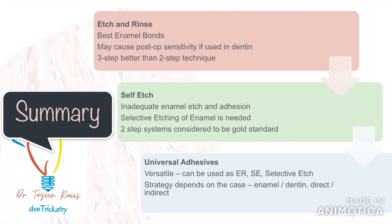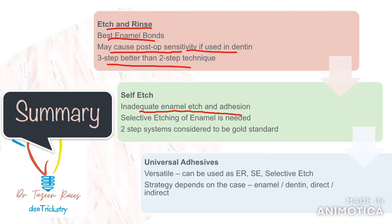Finally, to summarize: when it comes to etch and rinse adhesives, you get the best enamel bonds. It is a very good strategy for both direct and indirect restorations when limited to only the enamel. They may cause post-operative sensitivity if used on dentine without following the proper protocol, and the three-step system is better compared to the two-step system. For self-etched systems, one drawback is that it does not demineralize the enamel surface enough for a very good enamel bond, so selective etching of the enamel is preferred. When limited to dentine, self-etched systems are great. The two-step system is considered better than the single bottle system. Self-etched systems can be used for both direct and indirect restorations; for indirect use, a dual cure activator is preferred.